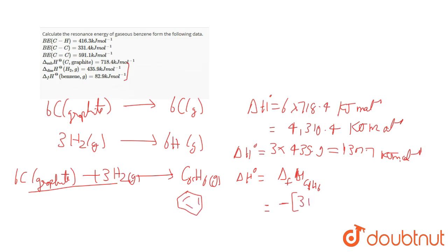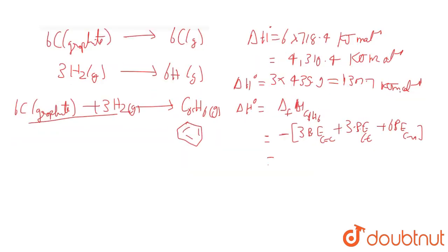For the product side, the benzene structure consists of 3 times the bond energy of C=C (double bond), plus 3 times the bond energy of C–C (single bond), plus 6 times the bond energy of C–H. Substituting the corresponding data, we get the heat of formation of benzene as −5265.3 kJ/mol.